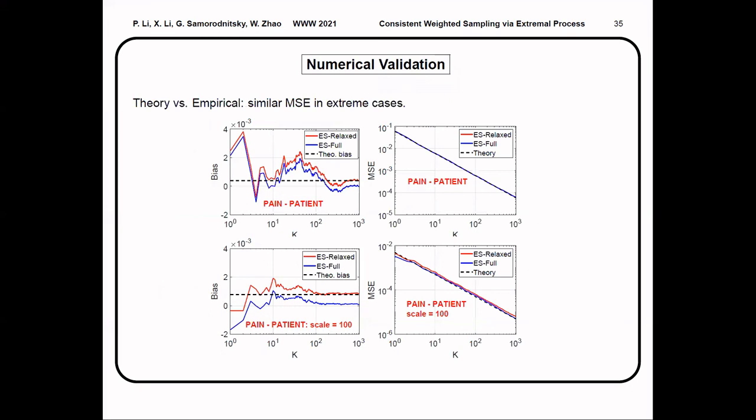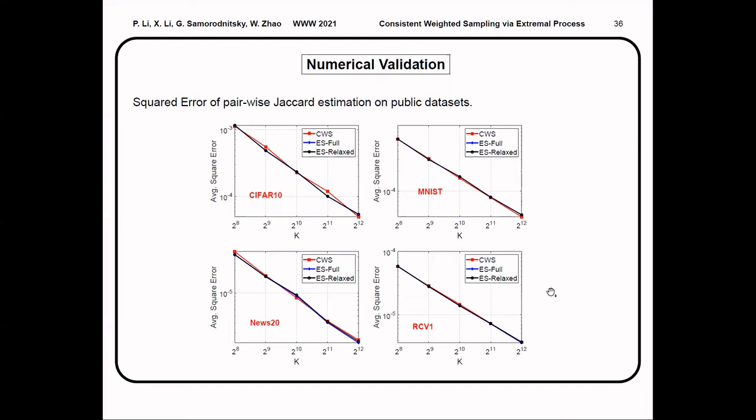Here's some numerical validation of our theoretical results. We see that in the very extreme case where c goes to 100, the mean squared error of relaxed ES is still very close to the full ES estimator. And from our experiments on four public datasets, we see that the squared error of pairwise Jaccard estimation of CWS, standard ES, and relaxed ES are very close to each other.